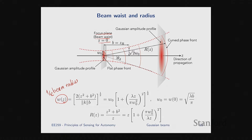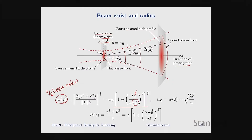How quickly the beam diverges depends on how tightly we focus it: W₀² is in the denominator, so a smaller focus means faster divergence. Specifically, the divergence angle θ_D is approximated by λ/(π·W₀). Smaller W₀ means larger θ_D and faster divergence. There is also a λ in the numerator, showing the same trade-off seen in millimeter-wave radar: higher frequency (smaller λ) means better collimation and smaller divergence angle.